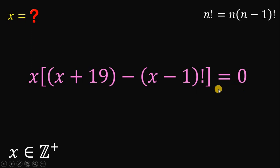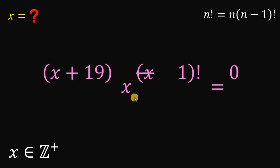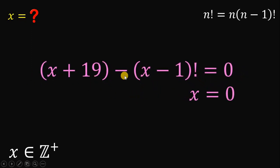Since this equation equals 0, at least one of them must be equal to 0. So we can say that x plus 19 minus x minus 1 factorial equals 0 or x equals 0. But take note that x is an element of positive integers meaning x must be greater than 0. So we can now disregard this case where x must be equal to 0.